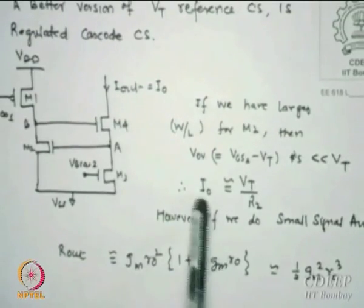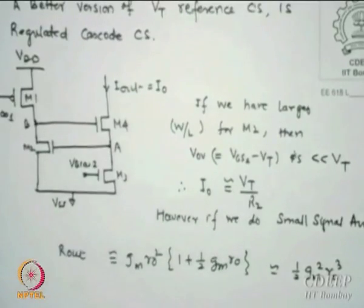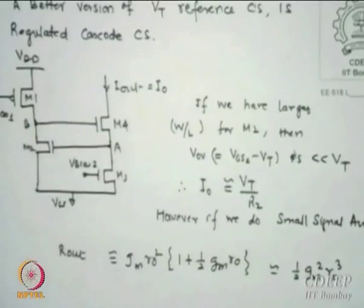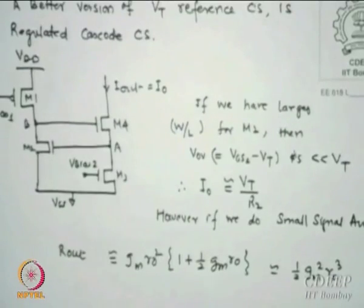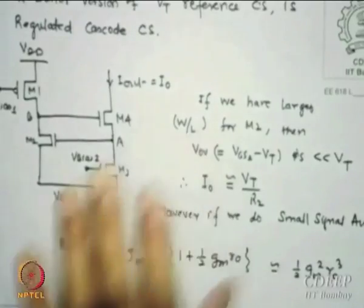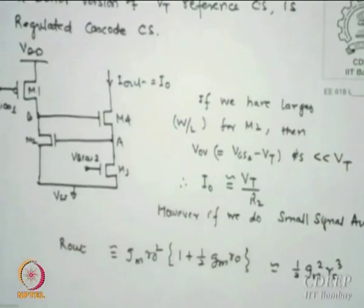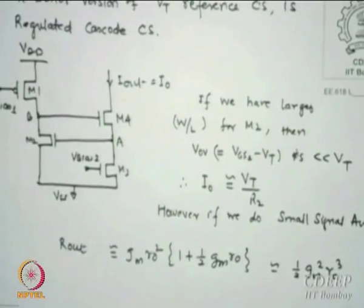If you look at the output resistance, I have already calculated R0 for a cascode - the AC output impedance is around gm² * r0³ assuming all transistors have the same W/L and lambdas. The current is VT divided by R2, because the maximum voltage across this will be VT, and R2 essentially gives you the current equal to I0.